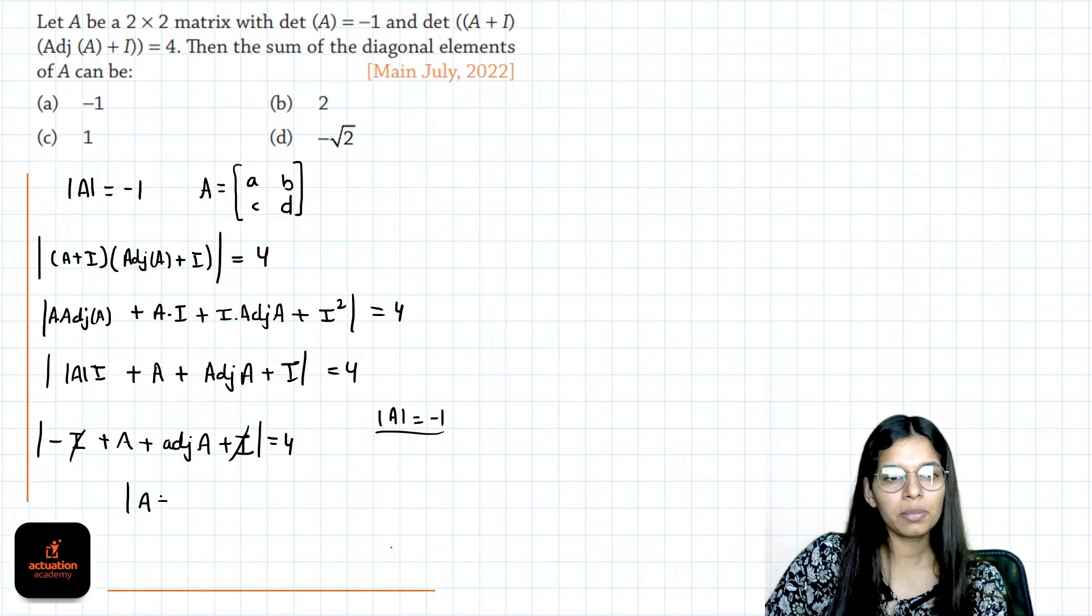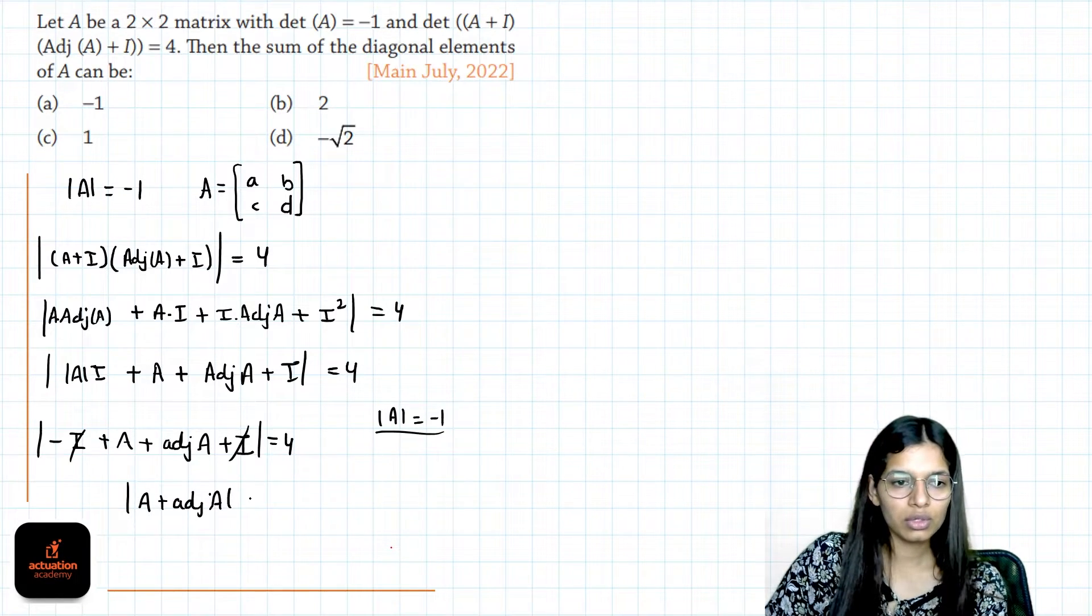So we get A plus adjoint of A, the whole determinant is 4.